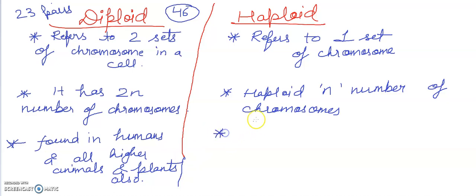And if we talk about haploid, gametes like ova and sperm. Gametes, you can write in brackets, ova and sperms are always haploid.